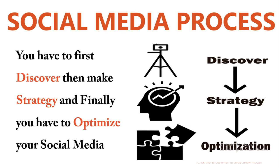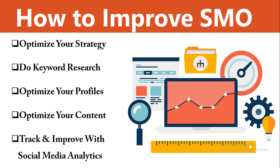Now we will be discussing how to improve SMO. There are some strategies to improve social media optimization. First is to optimize your strategy. A lack of social media strategy has been a roadblock for many companies — 28% of brands feel that a lack of strategy is the top barrier keeping them from becoming a social business. In order to optimize social media marketing campaigns, you need a strategy with clearly defined goals and objectives.